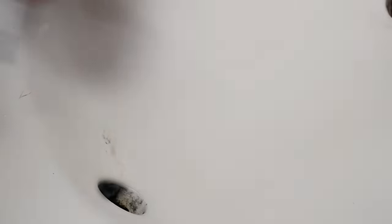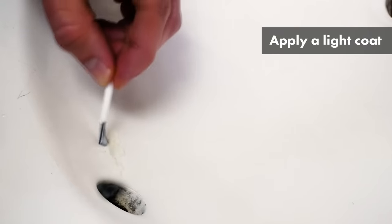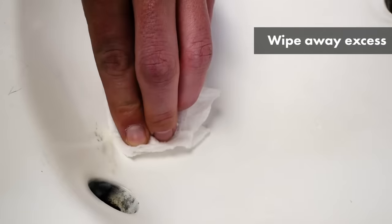After waiting, use the included brush to dab a light coat into the chip. Wipe away excess epoxy with a wet paper towel.